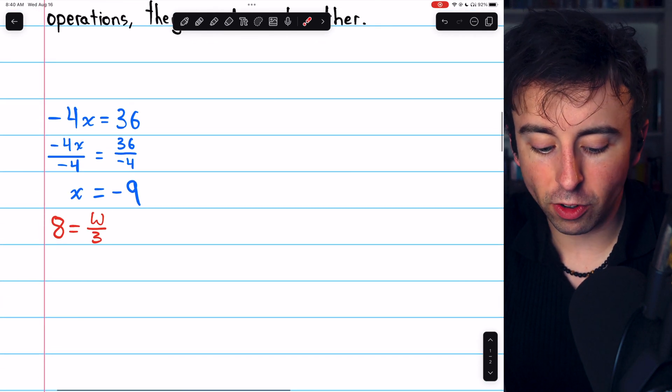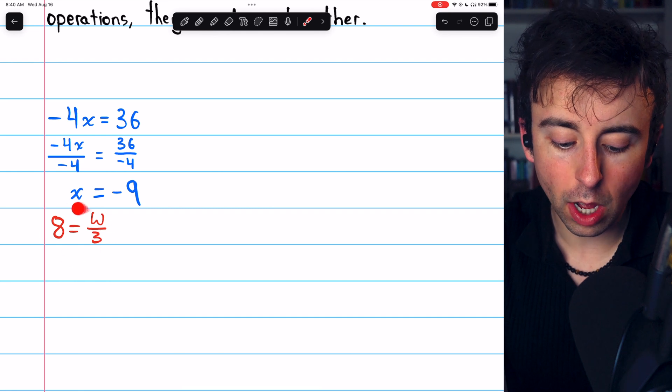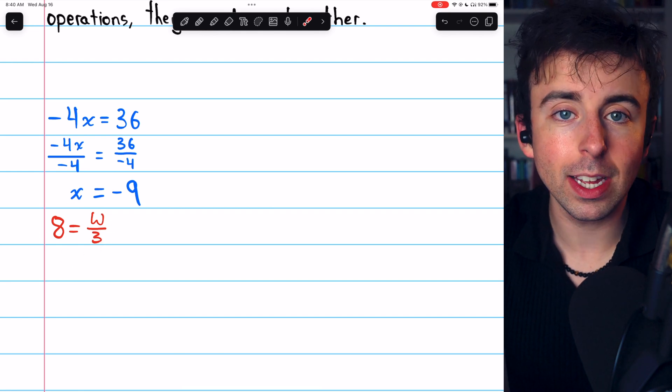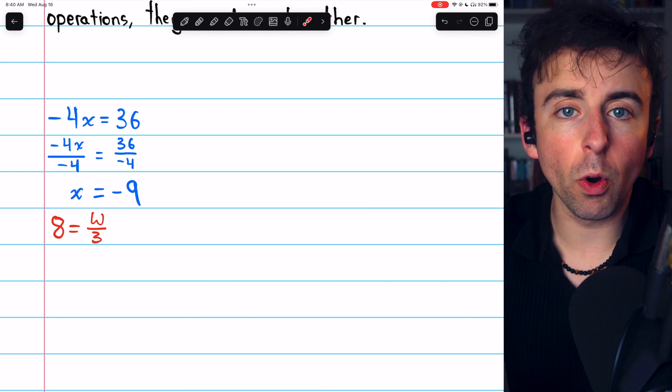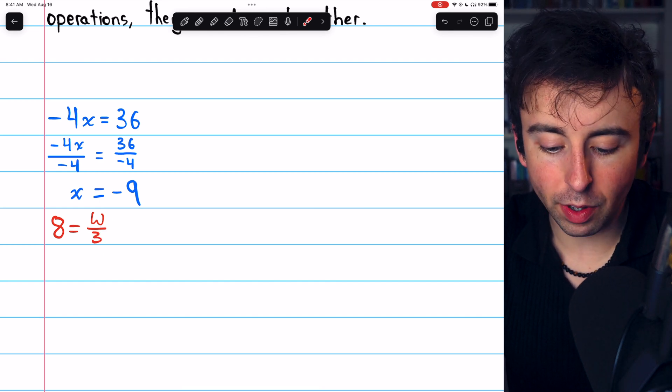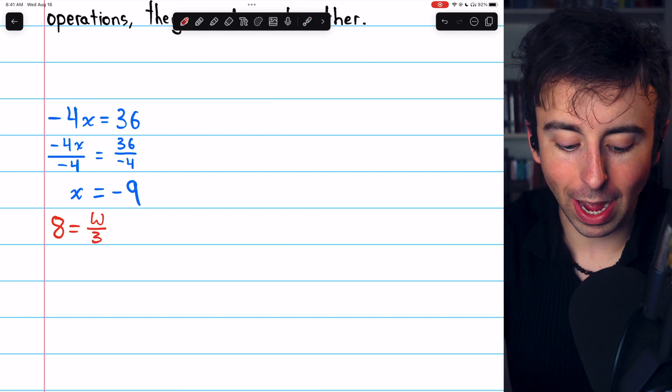In this next equation, we have 8 equals w divided by 3. This w over 3 is division. So we'll have to perform multiplication to undo that division and get w by itself.